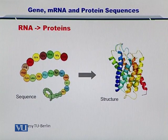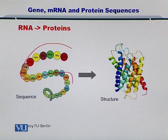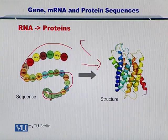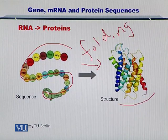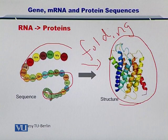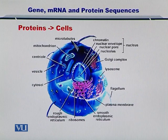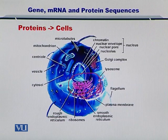Next, the RNA encodes for 20 amino acids, which come together in the form of a chain. And after a process called folding, the proteins take their 3D shape — we will look at this in detail in later modules as well. The proteins in the end constitute the cell and the various organelles within the cells as shown here.